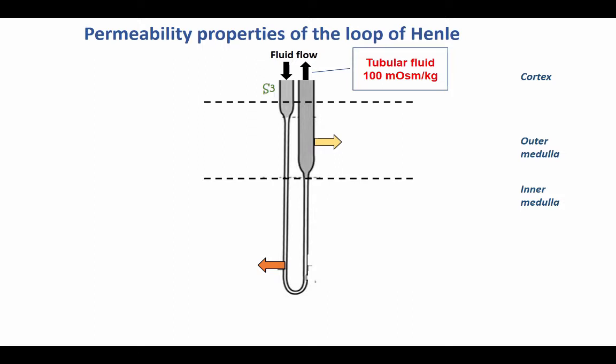Here we have a diagram of the loop of Henle. It is a countercurrent system with a descending limb going from the cortex down into the medulla, and then there is an ascending limb — the countercurrent flow — which runs from the medulla back into the cortex. Each of these three major segments will have different properties that are so vital for making a hyperosmotic fluid.